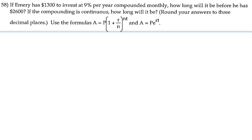Emery has $1,300 to start off with. So since we're starting off with $1,300, $1,300 is our principal amount.